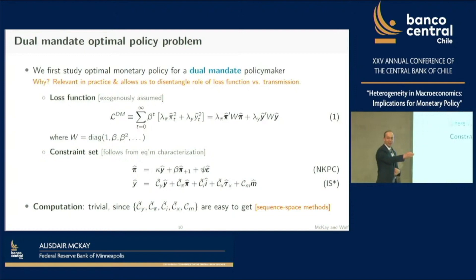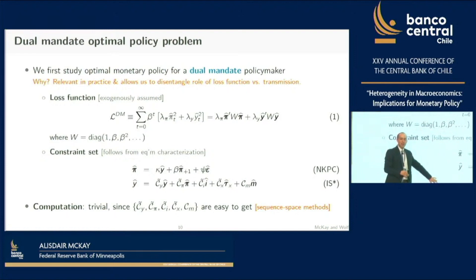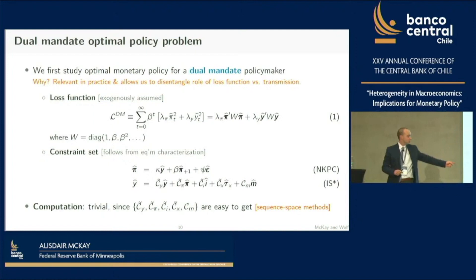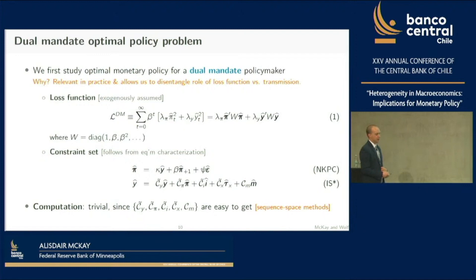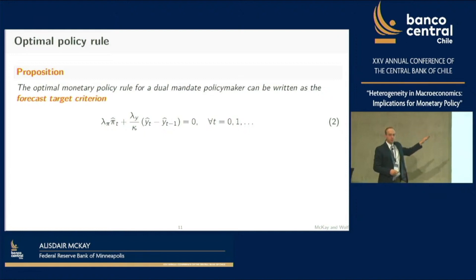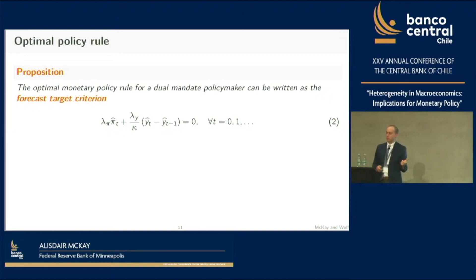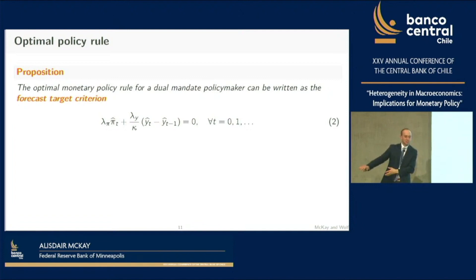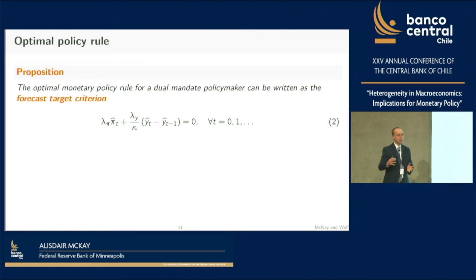We're minimizing this quadratic loss function subject to two linear equations. If you know Adrian and Ludwig's Python package, this calculation is fairly immediate, since the C-tilde matrices are more or less things you can get from their package. The optimal monetary policy rule is characterized by the same implicit equation you get in the representative agent model. To derive it, you treat the IS curve as a slack constraint—monetary policy can achieve whatever demand it wants, so the demand side isn't a binding constraint in the linear model.